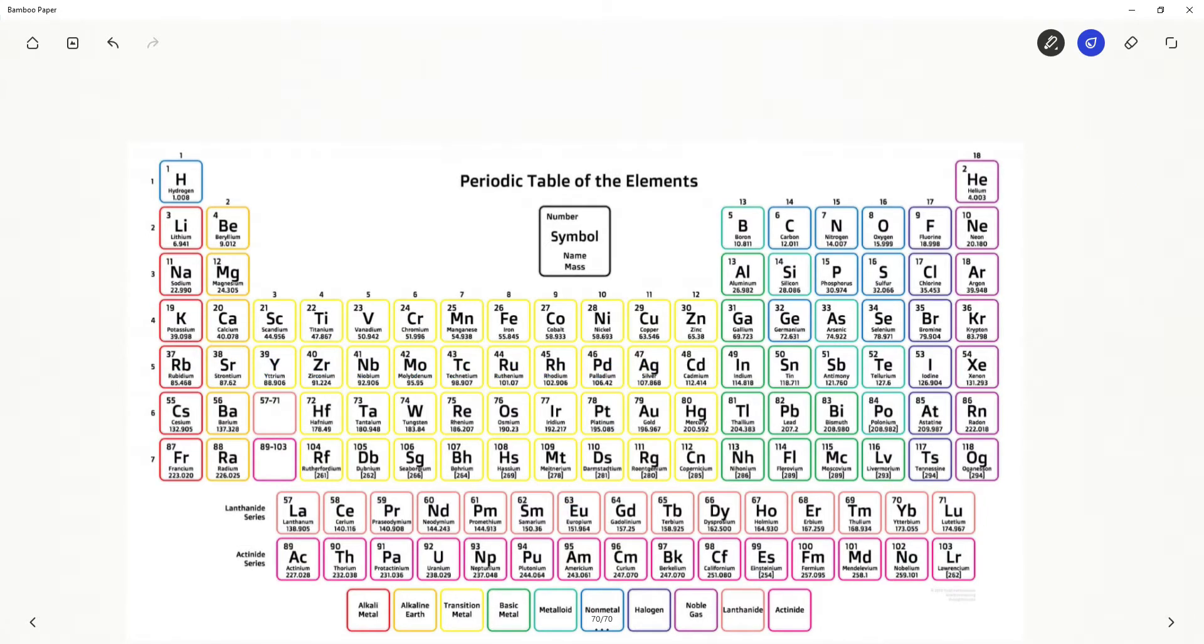The last exception I want to show you is for palladium atomic number 46. Here is our expected electron configuration. And here is what we actually find for palladium.